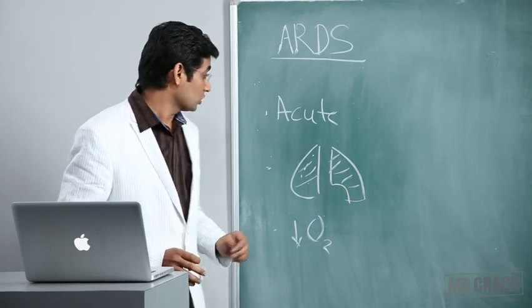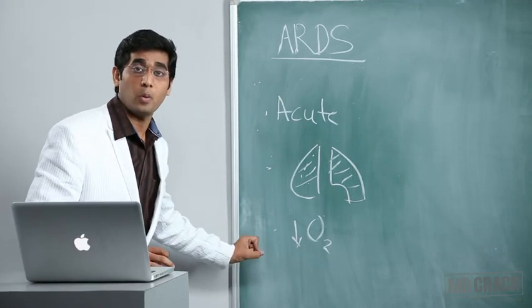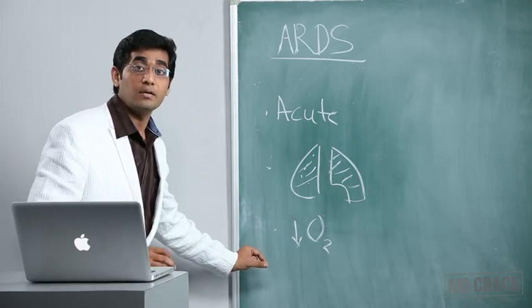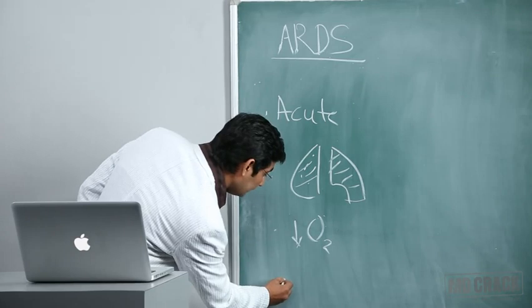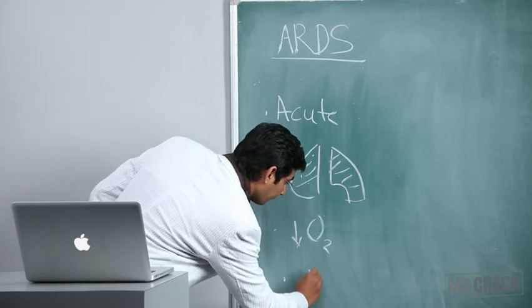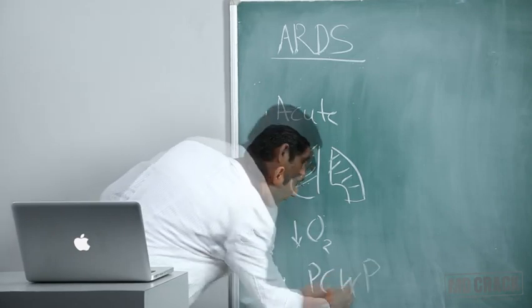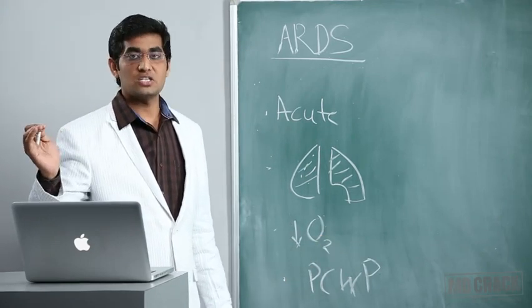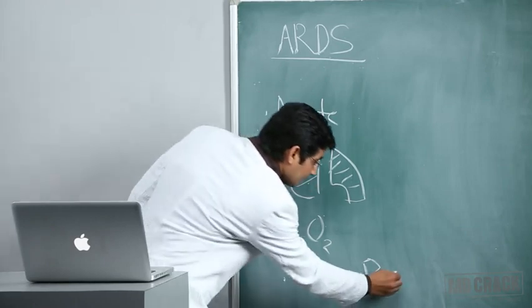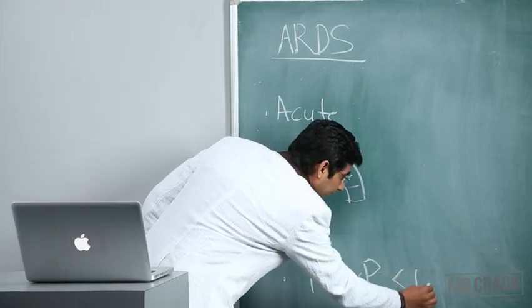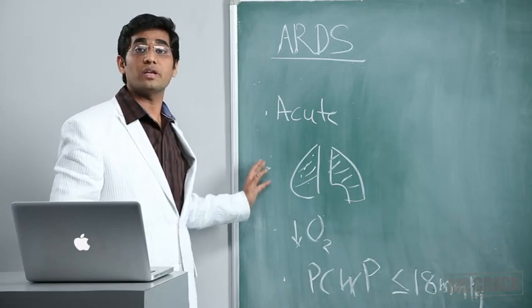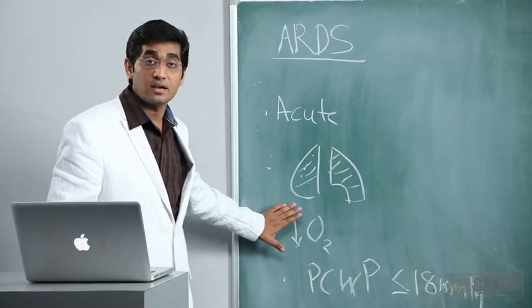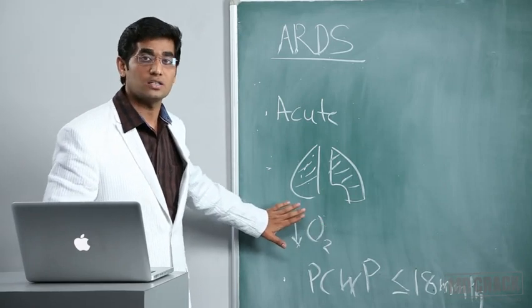The fourth and most important point in defining ARDS, usually forgotten by students, is pulmonary capillary wedge pressure. This indicates left atrial hypertension and should be less than or equal to 18 mmHg. These are the four important features of ARDS.